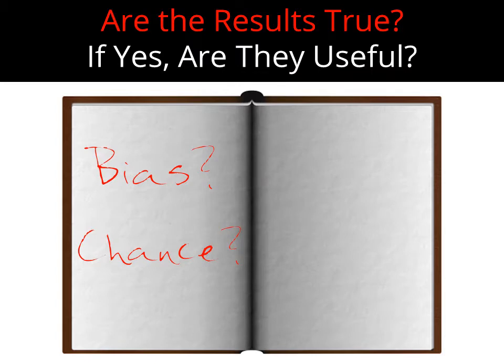When you're reading a medical research study, you're looking for anything that leads away from the truth, and there are two large buckets. One is bias — anything that systematically leads away from the truth. The word systematically means it's not by random chance. So you're looking for bias and you're looking for chance.